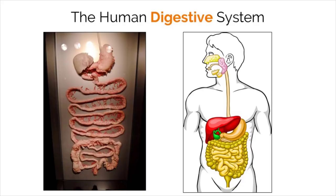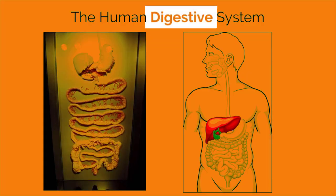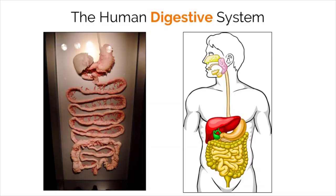Topic 6.1 in IB Biology focuses on the human digestive system. This system is designed to break down and absorb nutrients that will fuel cells in your body and eliminate waste products.